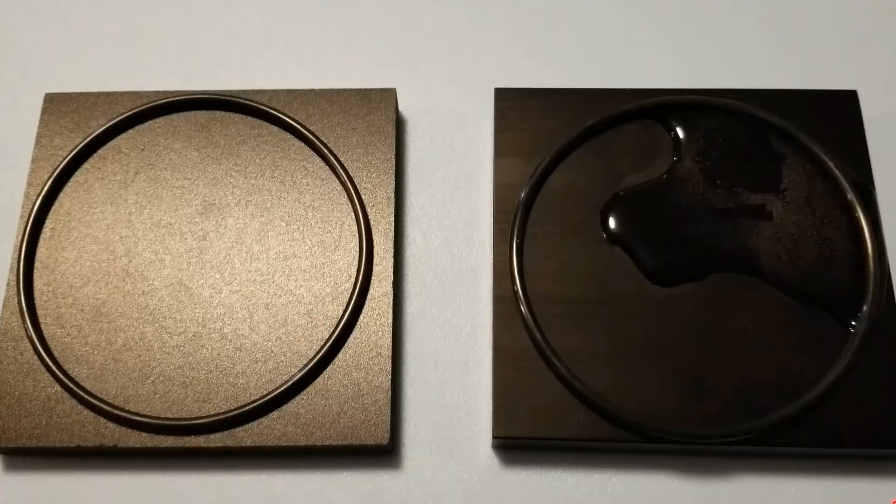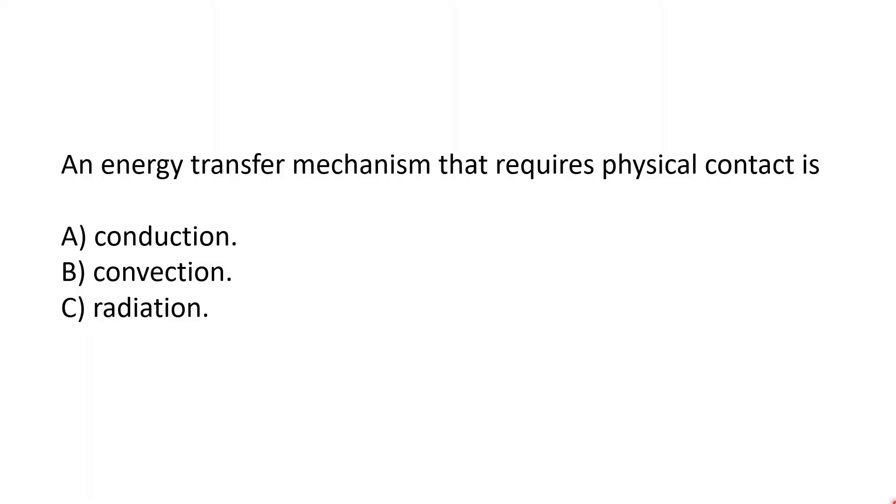I will explain why the object on the right was able to melt the ice so much more efficiently than the object on the left. But before I do that, I want to get to our example questions. I'll let you read through them and give you time to answer. The answer is conduction. Conduction requires physical contact. So conduction is the key to explaining the difference between the black square on the left and the black square on the right. Even if you didn't read through the book, you probably have some intuition for the concept of conduction.